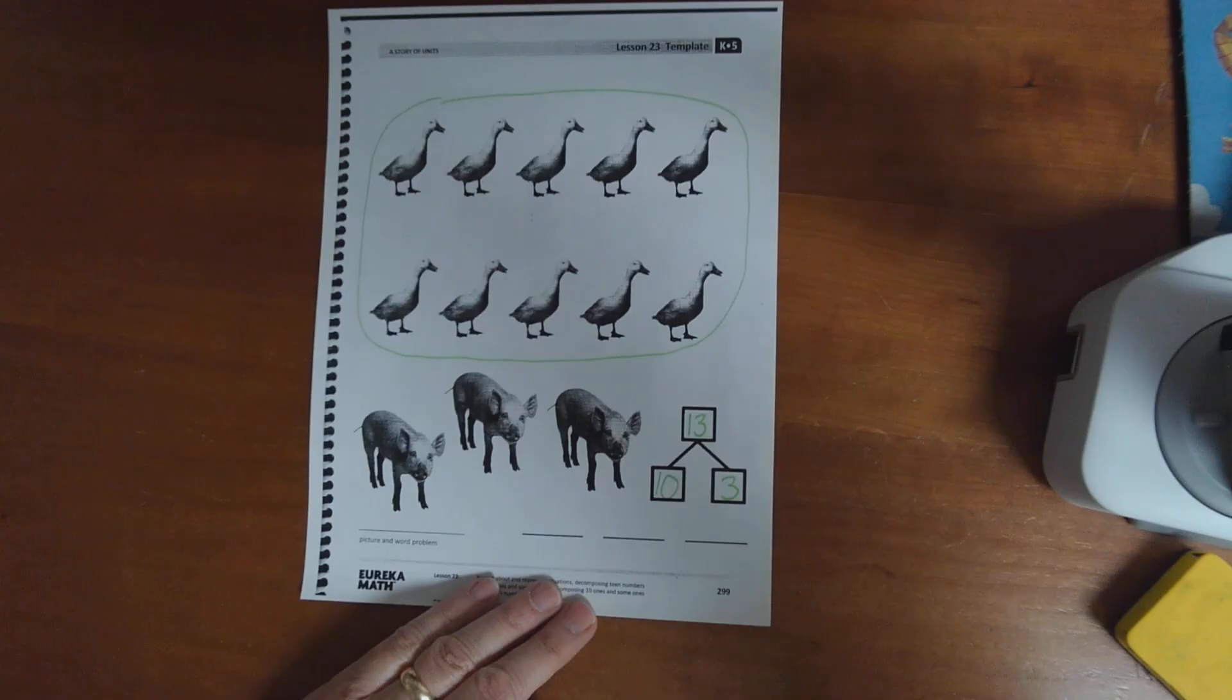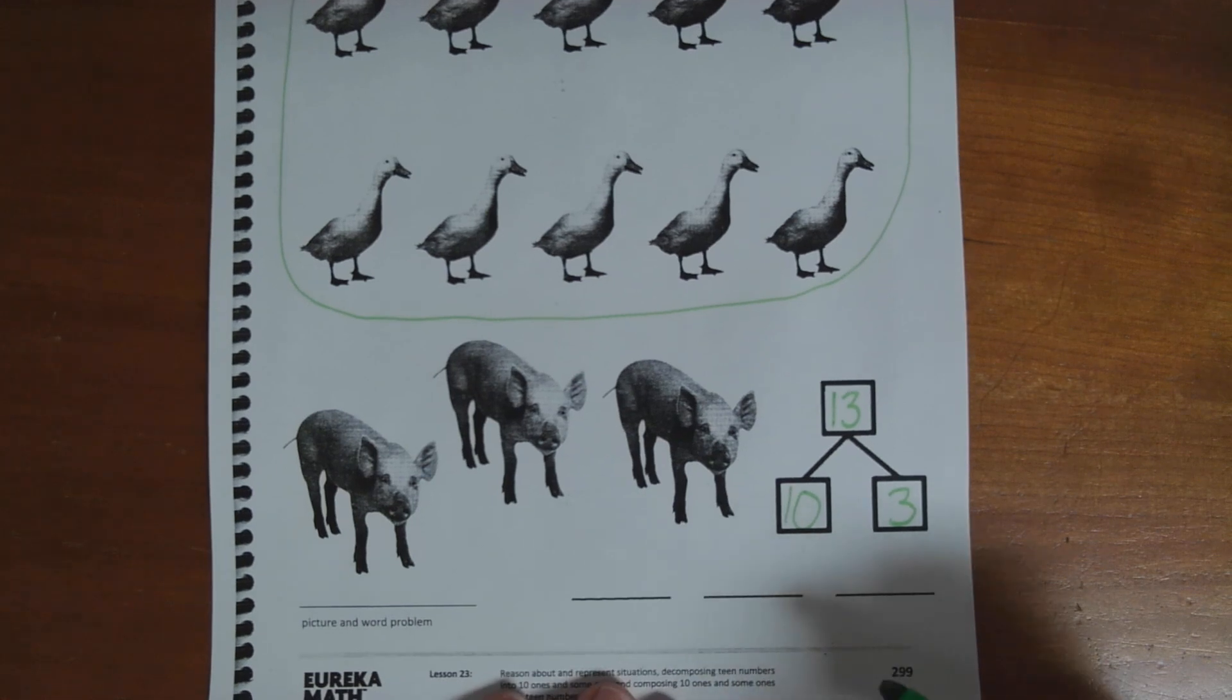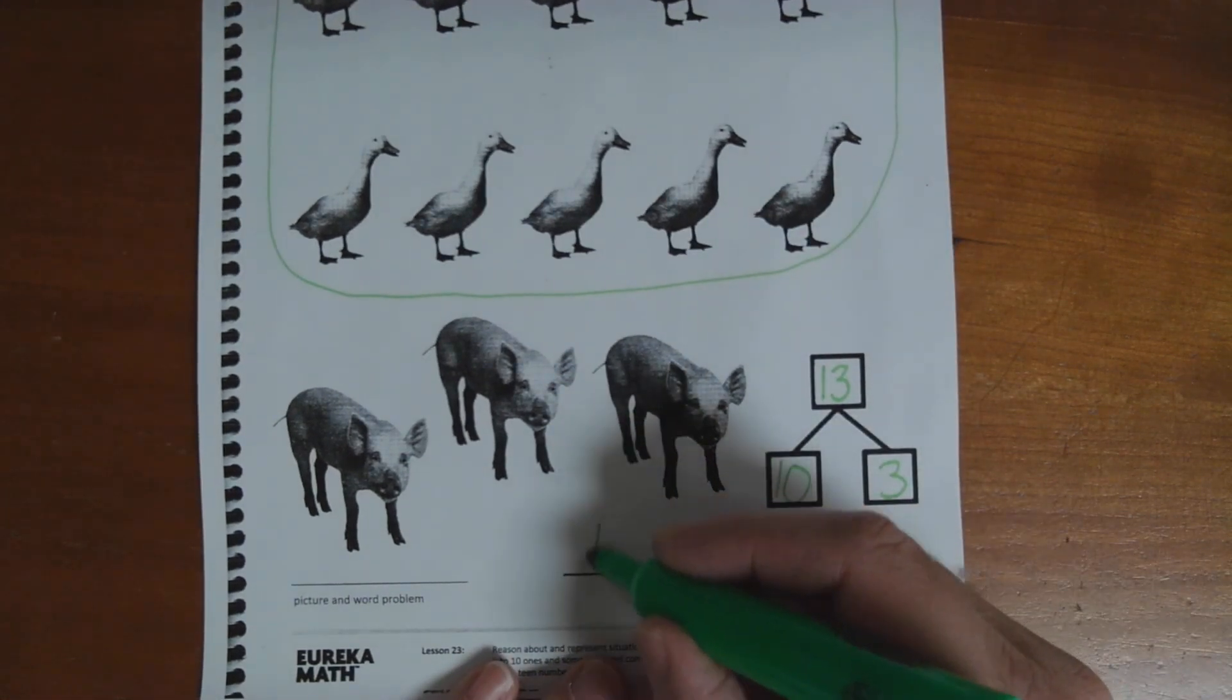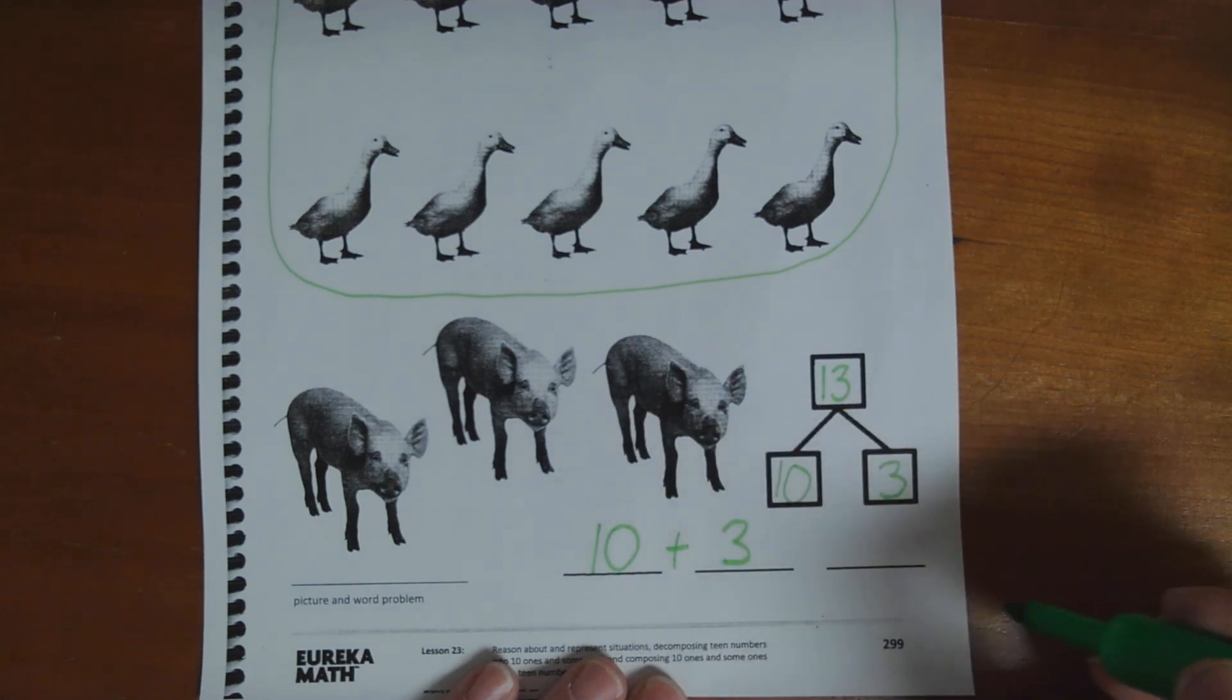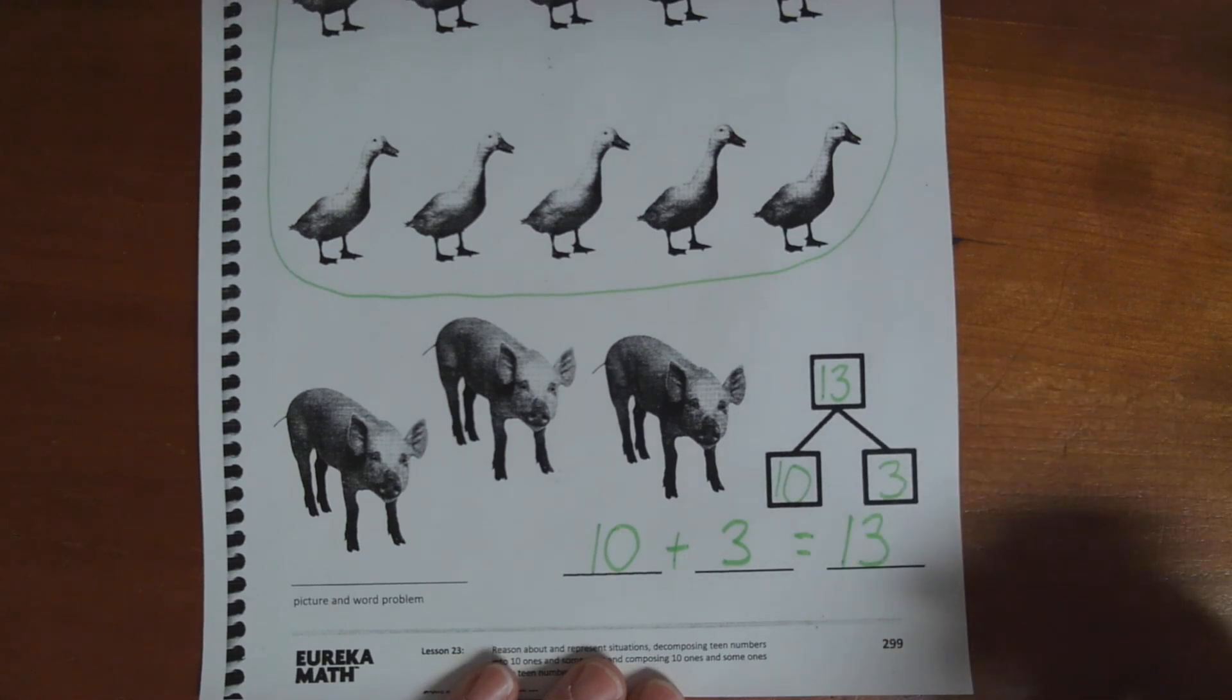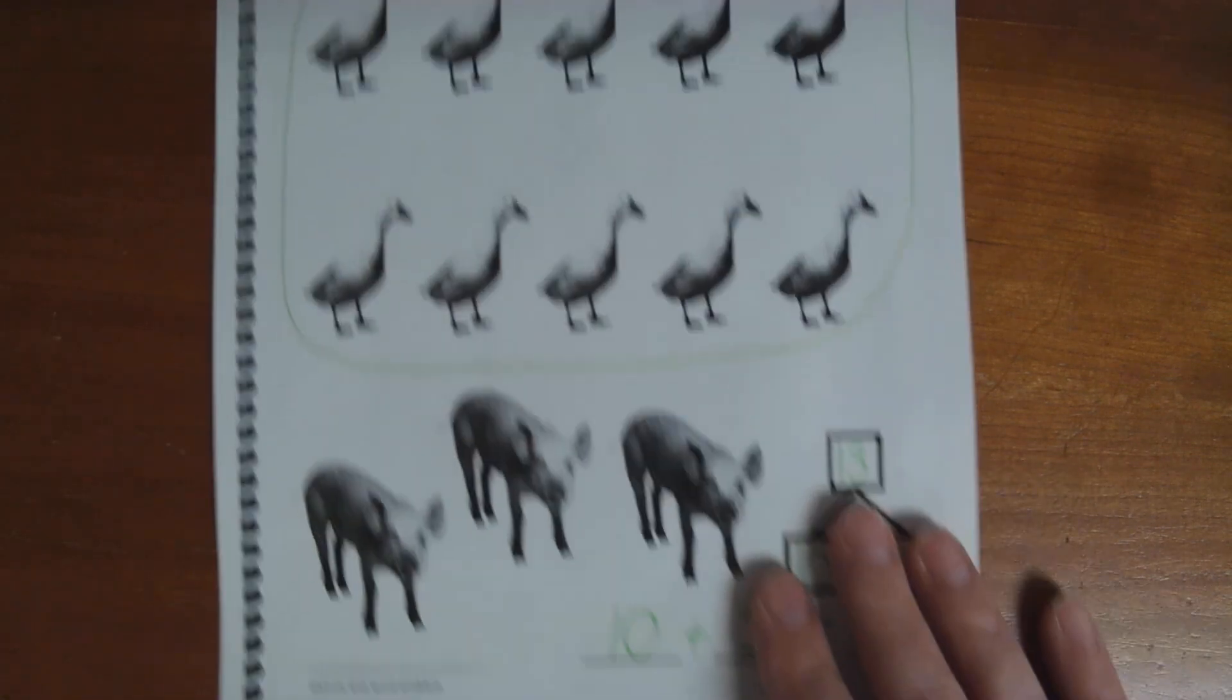Now, I'm going to write... Let's get a little closer. You'll probably see that a little bit better. Now, I'm going to write a number sentence. And how am I going to write that number sentence? Well, I'm going to do my part, 10. Now, I have to write a plus sign here, plus 3. And then I'm going to do an equal sign. And my whole is 13. And that's what your problem set is for today.